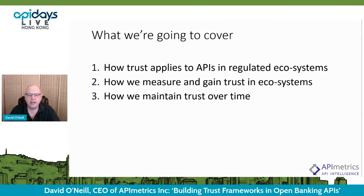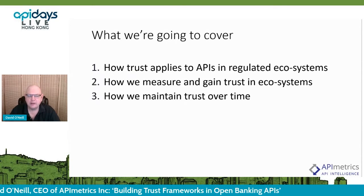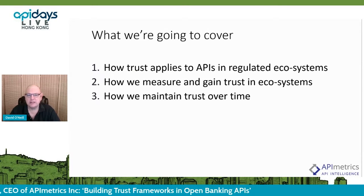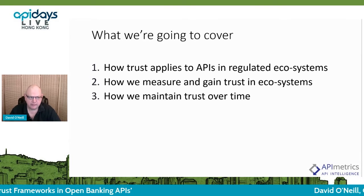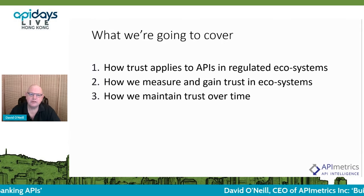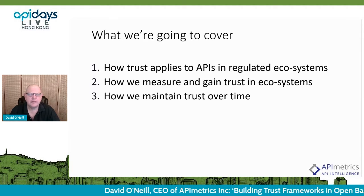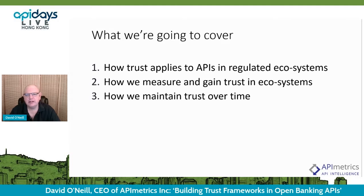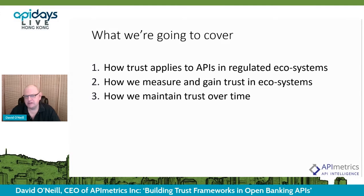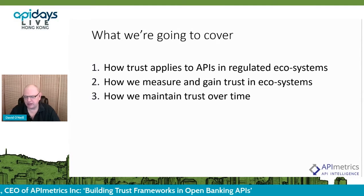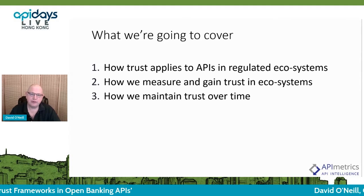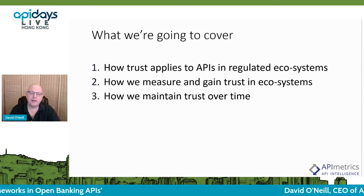I'm going to cover how trust applies to APIs in regulated ecosystems, how we measure and gain trust, and how we maintain that trust over time. With API networks and API systems, you can't just release and be done. Things will change, things will evolve, things will break, and we need common frameworks for understanding what that all means.